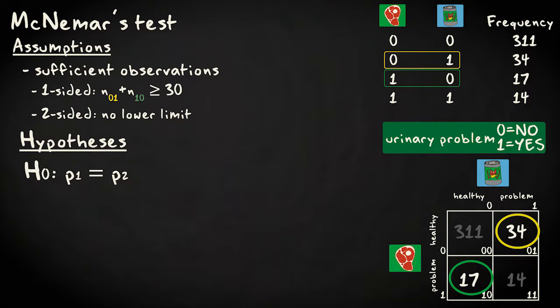The null hypothesis states that the population proportion in the first group, or at the first measurement, is the same as in the second group, or at the second measurement. This corresponds to an equal number of inconsistent cases.